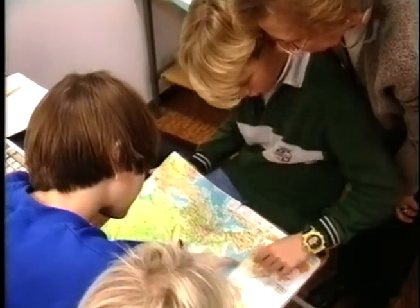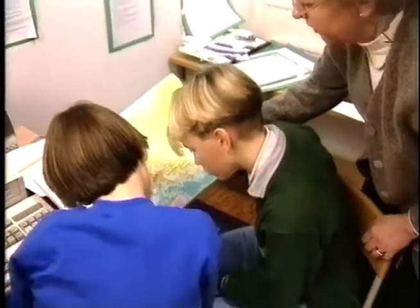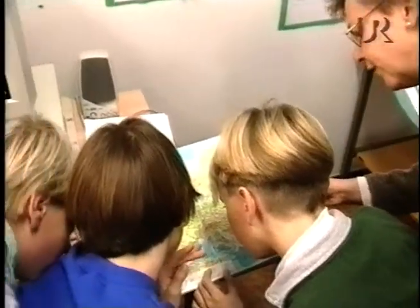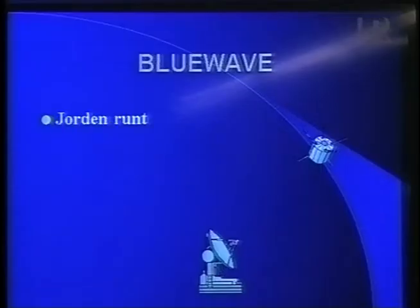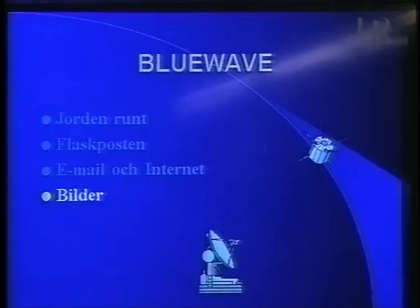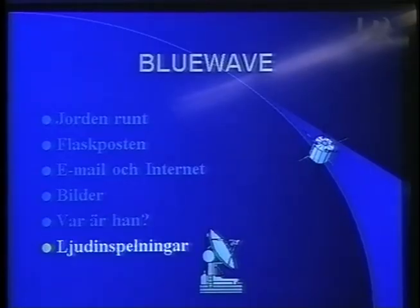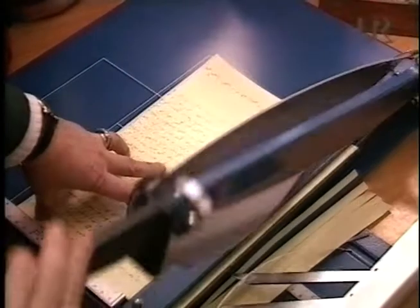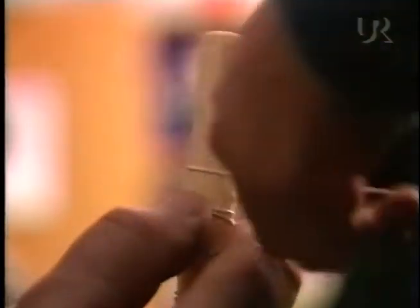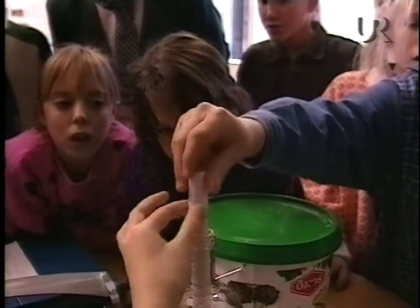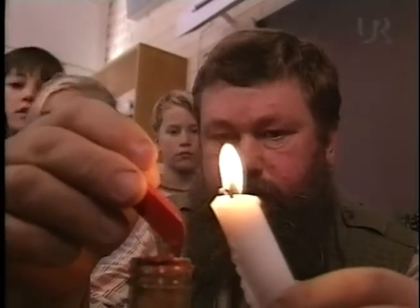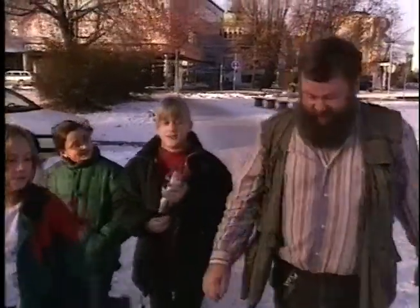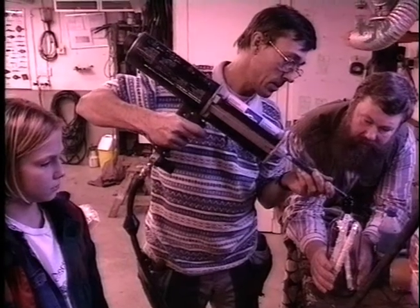Det som är bra i det här projektet tycker jag är att det integrerar många ämnen. Geografi naturligtvis – vi tittar ju ständigt på kartan för att se var Dennis befinner sig. Vi kommer in på olika språk, det finns alla anknytningar. Att skicka en flaskpost ingick också i projektet Blue Wave. Tanken med flaskposten var att han skulle slänga den i havet någonstans utanför Australien, och vi skulle då kunna följa vindar och havströmmar och fantisera om var just vår flaskpost skulle hamna.